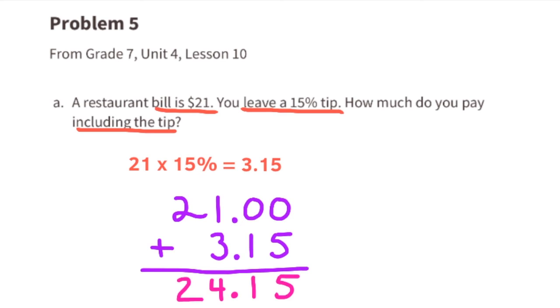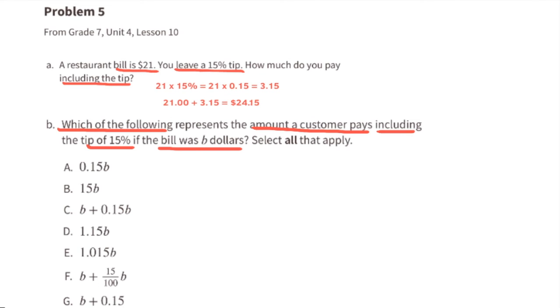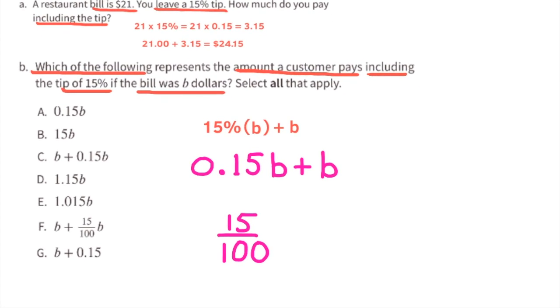Part b: Which of the following represents the amount a customer pays, including the tip of 15 percent, if the bill was b dollars? Select all that apply. 15 percent of the bill plus the bill. We could rewrite that as 0.15 times b, representing 15% of the bill, plus b, representing the actual bill. The first part of this expression, 0.15b, represents the tip, and then plus b represents the bill.